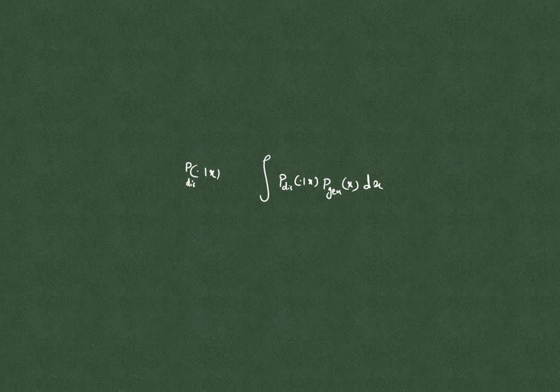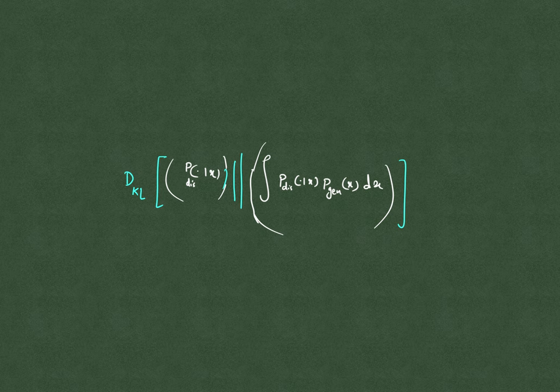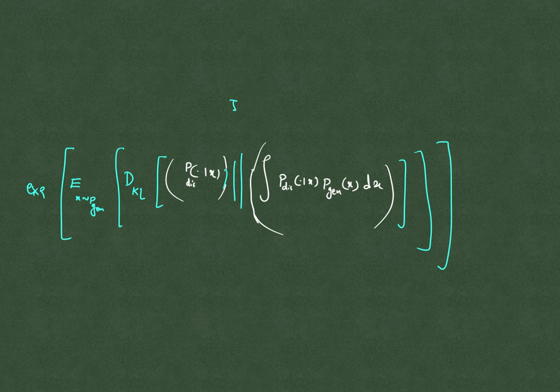To measure this, you use KL divergence. You compute the KL divergence between p(y|x) and p(y) as a measure of dissimilarity between the two distributions. Then you compute the expectation of this KL divergence over synthetic images x sampled from p_gen, and take the exponential of that — giving you the Inception Score.